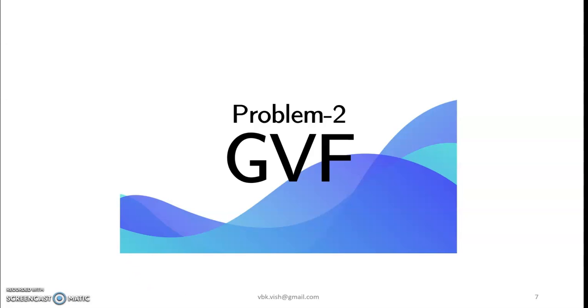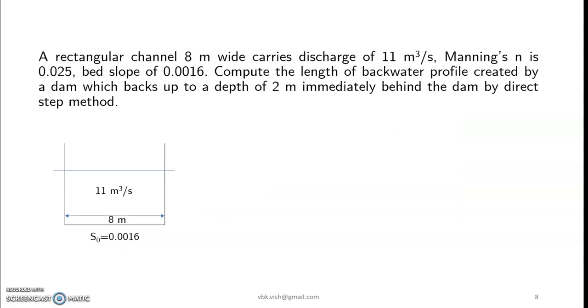Hello everyone, let's look into one more numerical problem from the concept of gradually varied flow. Here goes the problem statement. A rectangular channel 8 meters wide carries discharge of 11 cubic meters per second. Manning's n is 0.025, bed slope of 0.0016. Compute the length of backwater profile created by a dam which backs up to a depth of 2 meters immediately behind the dam by direct step method.